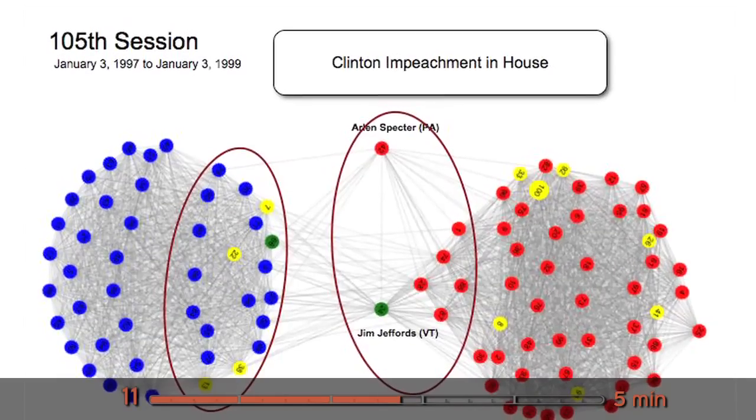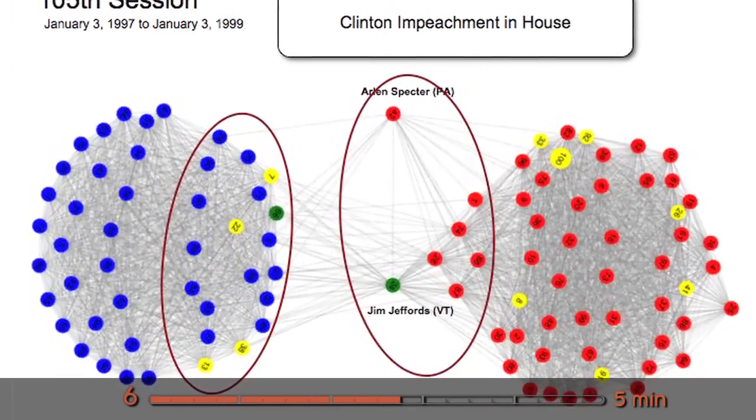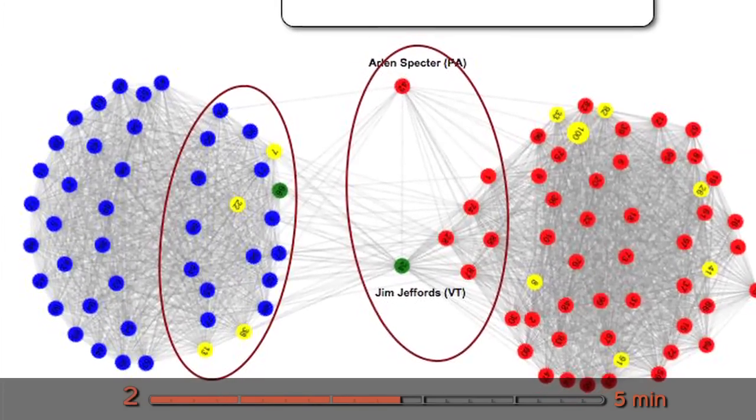The year later, you can see this is the impeachment vote in the House of President Clinton. So you can see again the same structure reemerges. But on the Democratic side, you notice a very distinct split where you can see two sort of 50-50 groups.